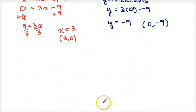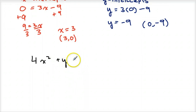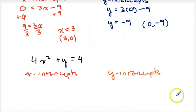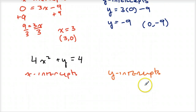Now I want you to try an example on your own. Find the intercepts of the equation 4x squared plus y equals 4. You're going to find the x-intercepts and the y-intercepts. I'll give you a hint: there are two x-intercepts and only one y-intercept. Pause the video, try this example on your own, and then restart the video and I will show you the solution.